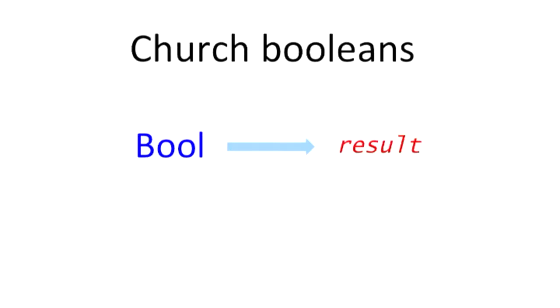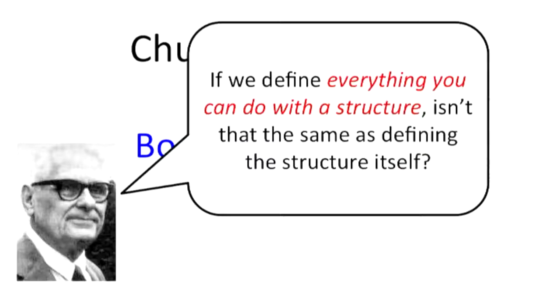And there's a sort of a philosophical point for what this really means here because if we can define everything you can do with a structure, is that any different from just defining the structure itself? What does it even mean to define a structure separately from all the things that you can do with it? And this is kind of what this function signature means. So a Boolean is either true or false. And if you want to do something with a Boolean, if you know what to do when it's true and you know what to do when it's false, then you know what to do with the Boolean.